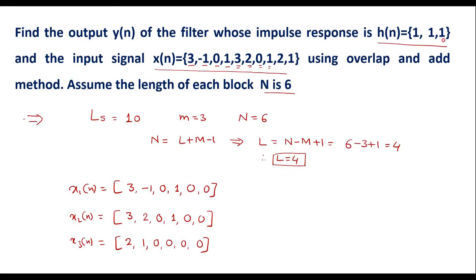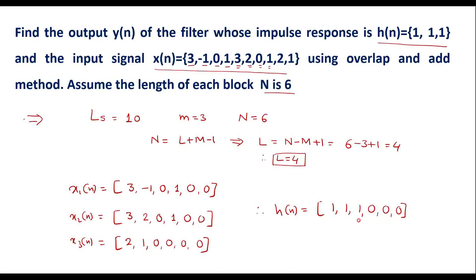The h[n] sequence is 1, 1, 1. We need to make the length of h[n] also equal to N equals 6, so we add L minus 1 equals 3 zeros. Therefore h[n] becomes 1, 1, 1, 0, 0, 0, with length 6. The next step is to perform circular convolution between each sub-block and h[n].